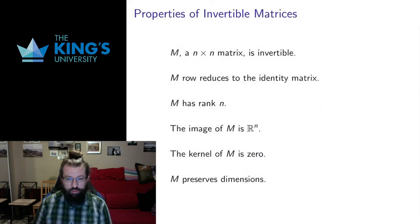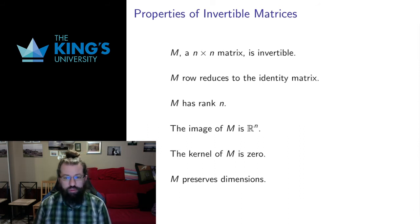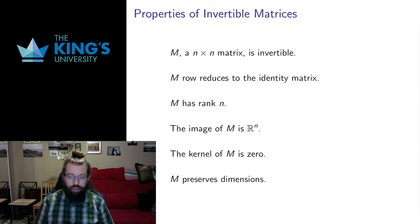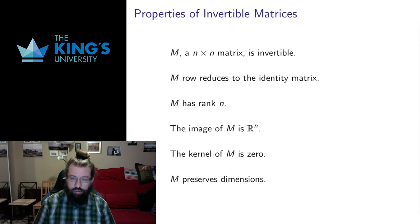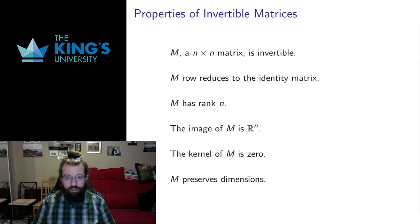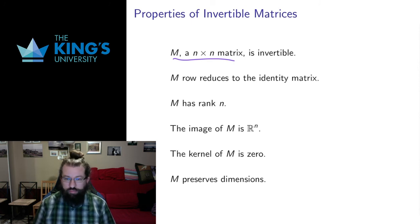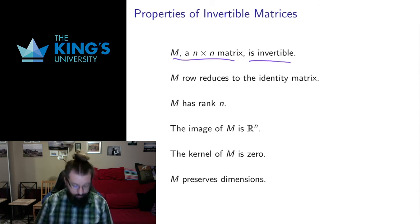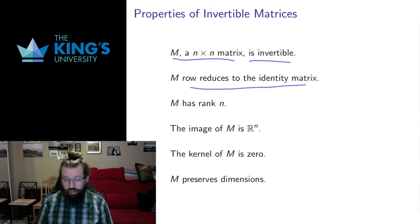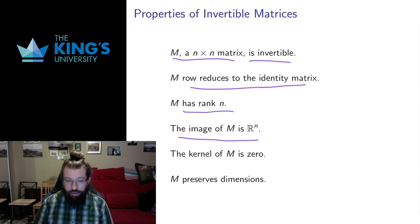I'm already collecting a number of properties of invertible matrices, so let me catalog those for you. We're going to add to this list as the course goes on — it's really nice to have a bunch of ways to check the invertibility of matrices, since it's a very important property. If I have an n by n matrix, all of the following are equivalent, each implying all the others: the matrix is invertible; it row reduces to the identity; it has rank n; its image is the entire space; and its kernel is zero.